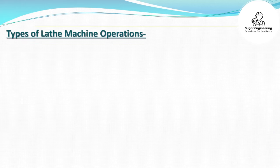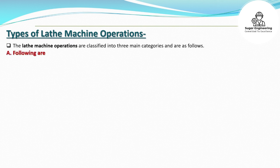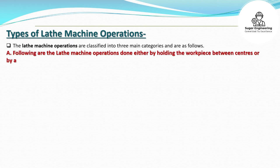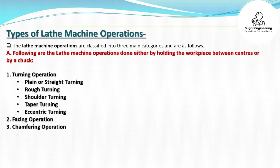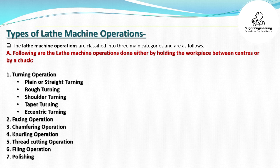Types of Lathe Machine Operations. The lathe machine operations are classified into three main categories. The following are the lathe machine operations done either by holding the workpiece between centers or by a chuck: turning operation, plain or straight turning, rough turning, shoulder turning, taper turning, and eccentric turning.